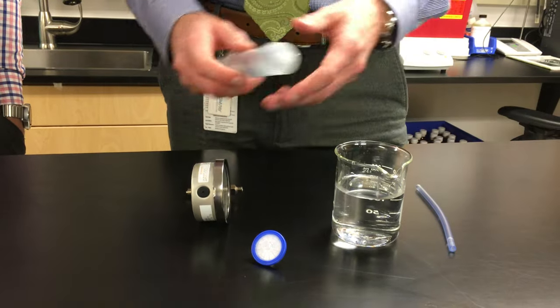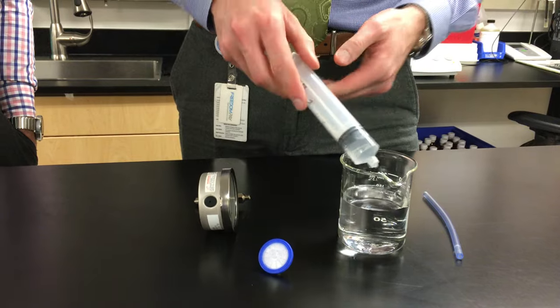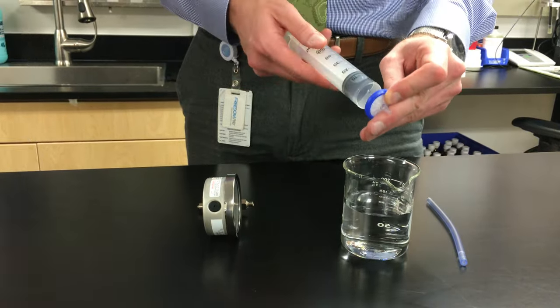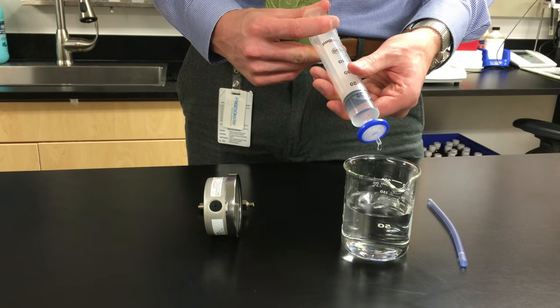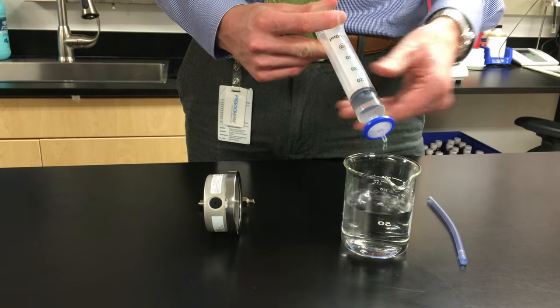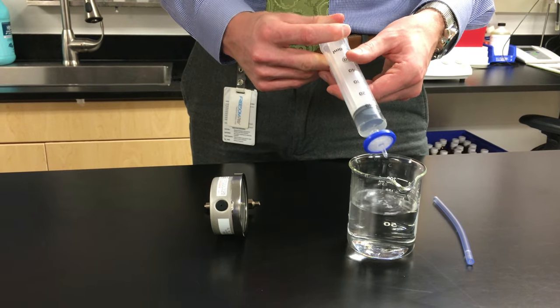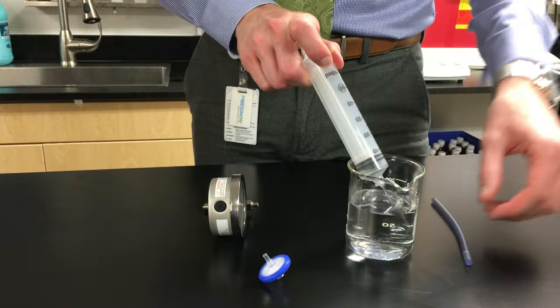The first step is to rinse the filter. We pass about 5 to 10 milliliters of water through the sterilization filter to rinse it out, because if it's dry, it will fail the test right away. Once it's been rinsed, set it aside.